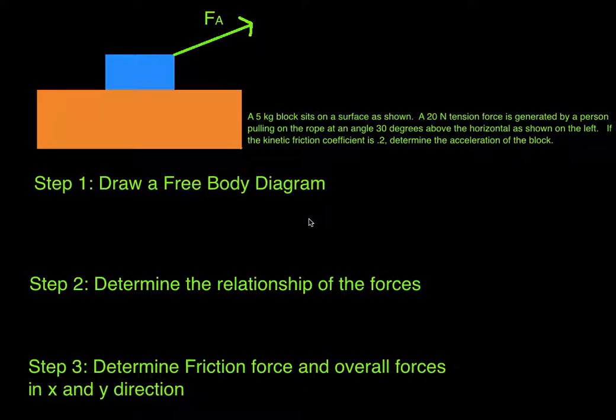A telegram block sits on the surface as shown. A 20 Newton tension force is generated by a person pulling on the rope at an angle of 30 degrees above the horizontal as shown on the left. The kinetic friction coefficient is 0.2. Determine the acceleration of the block.